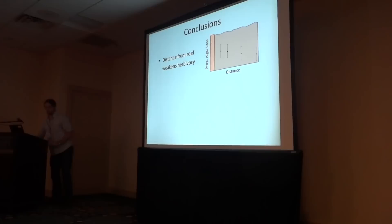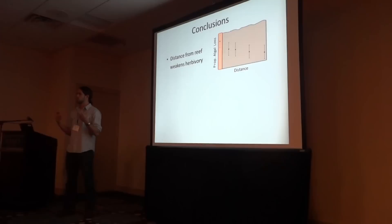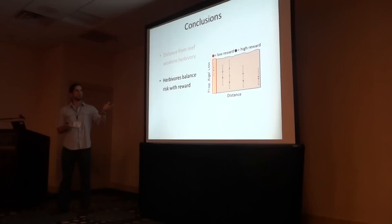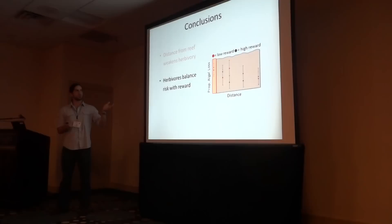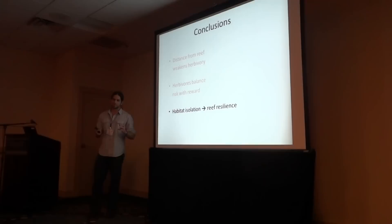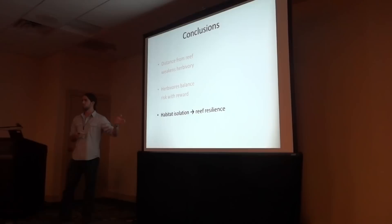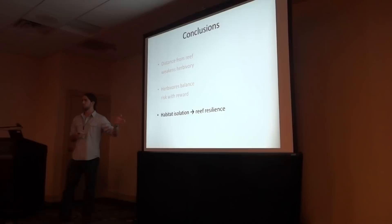For my conclusions: this study demonstrated what we would expect. Distance from reef weakens herbivory, and this coincides with observations made over many years of grazing halos around reef habitats. This study also shows that herbivores may be balancing risk with reward as expected from an optimal foraging perspective: if we increase the incentive, there is a proportional increase in the amount of risk a consumer is willing to take. Scaling up from small artificial habitat patches to larger patches of reef habitat, we can think of habitat isolation as having potential implications for reef resilience.